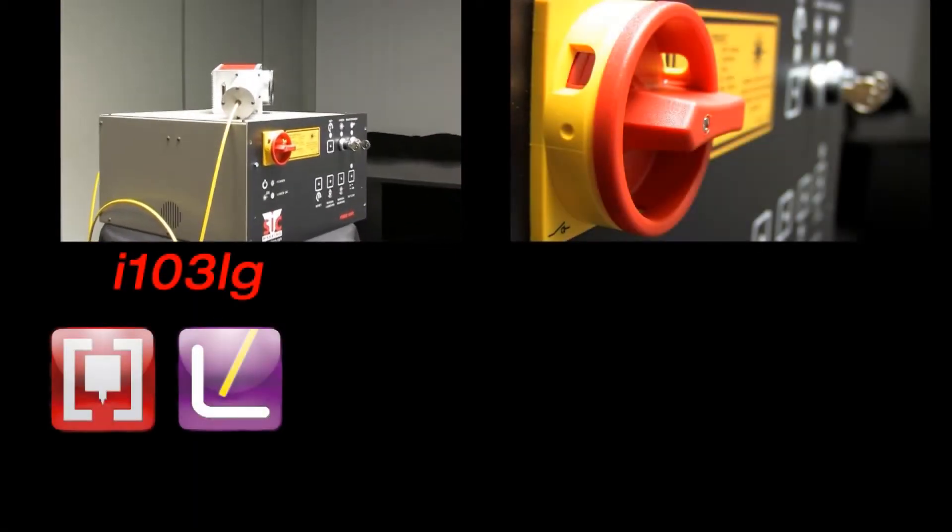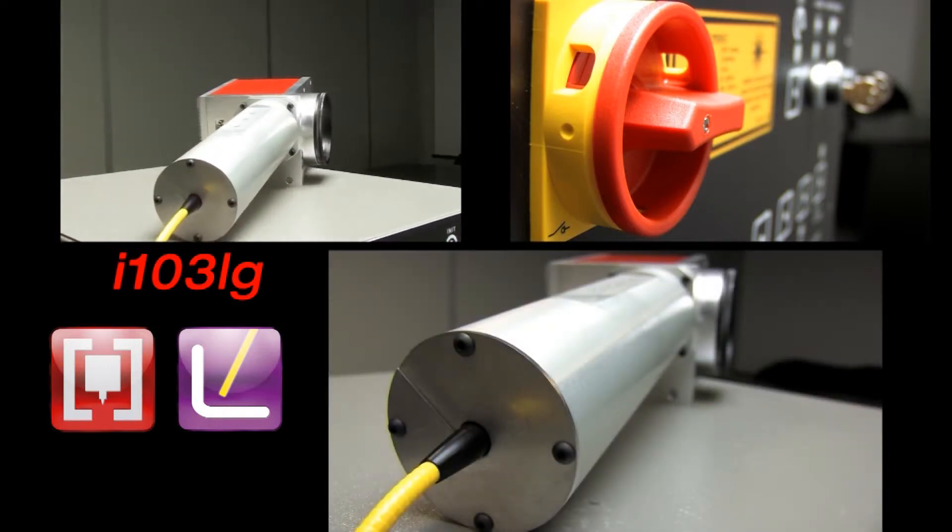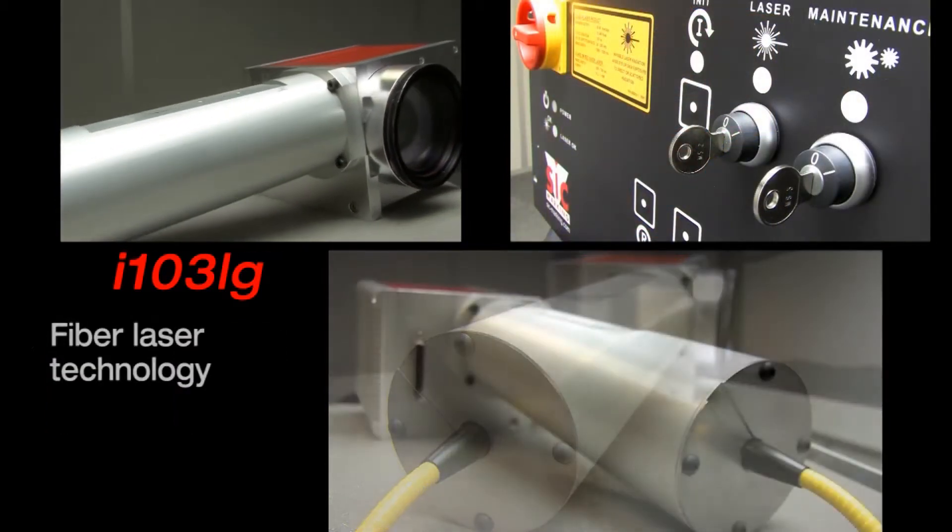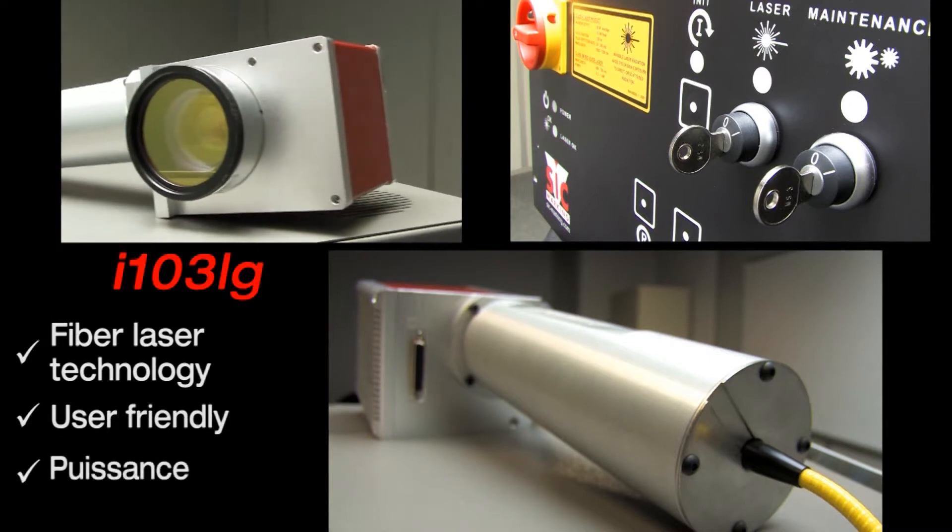The i103LG is designed with fiber laser technology doped with Ytterbium. It is composed of an electronic controller called fiber unit and a galvanometric marking head.